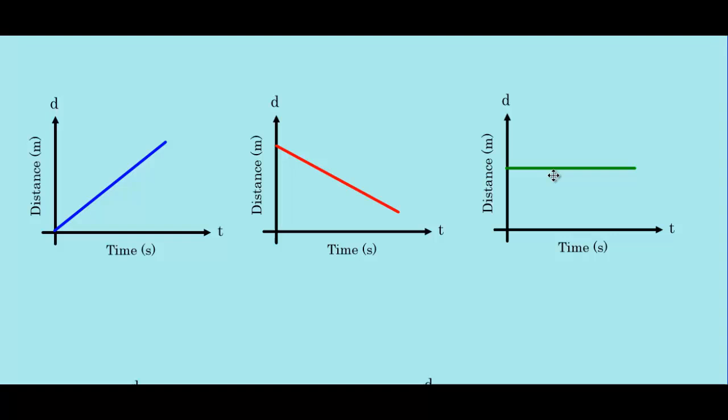As lines move upwards, the trend is you are moving away. As lines move downwards, the trend is you are coming closer. And if lines are staying flat, that means that you aren't moving at all.